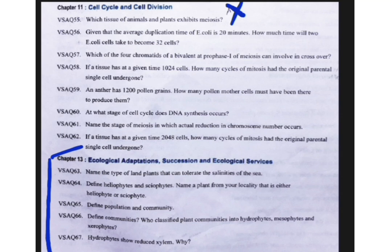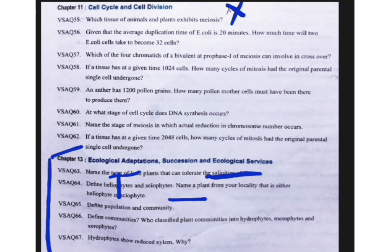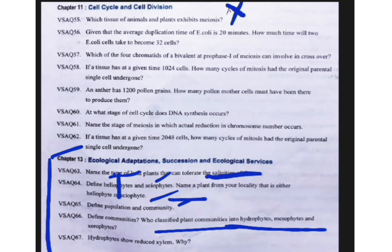In Chapter 13, topics include: examples of plants that tolerate salinity conditions, heliophytes and sciophytes — heliophytes live under direct sunlight with examples like Opuntia, and sciophytes live in shady places like ferns and mosses. Population versus community — if only one species is present that is a population; if multiple different species of populations are observed, that is a community. Also prepare hydrophytes, mesophytes, and xerophytes — who classified them, define communities, and why hydrophytes show reduced xylem. For very short answers, give two to four points only.